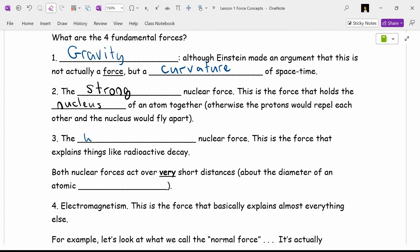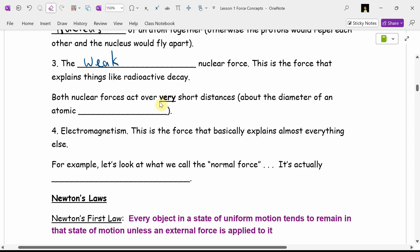Well, if there's a strong nuclear force, there's also something called the weak nuclear force. This also acts over very small distances, like the diameter of an atomic nucleus. This helps explain things like radioactive decay. It's complicated, but it explains radioactive decay. Both nuclear forces act over very short distances about the diameter of an atomic nucleus.